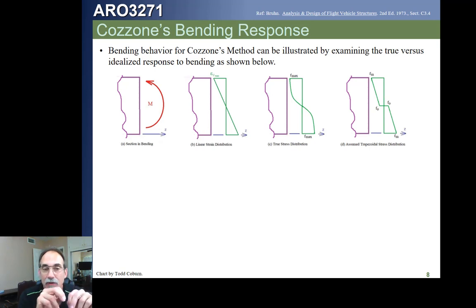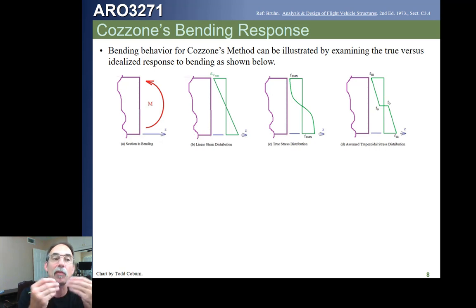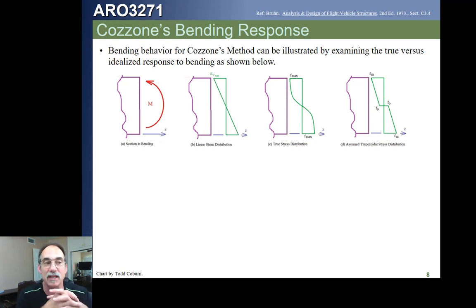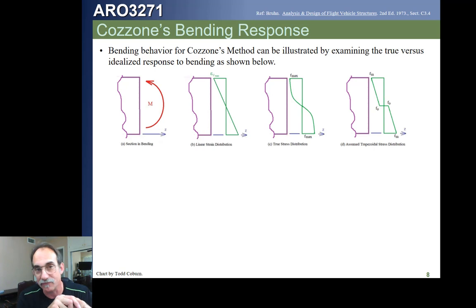Whenever we're implementing Cozzone's method, we're first going to look at a table of properties to find out if we have Fm and Fo for the material in question. If we do, we will use those values. If we don't, we're going to approximate Fm as Ftu and Fo as Fty.